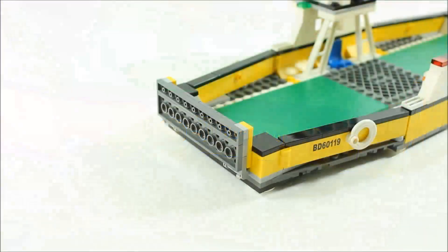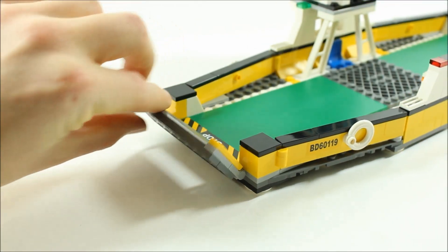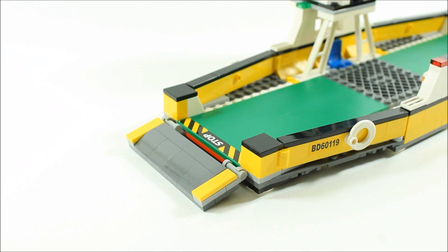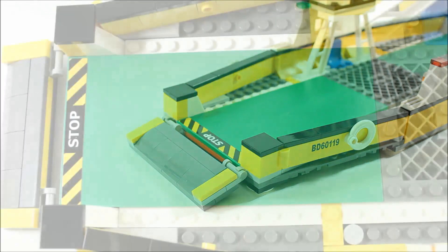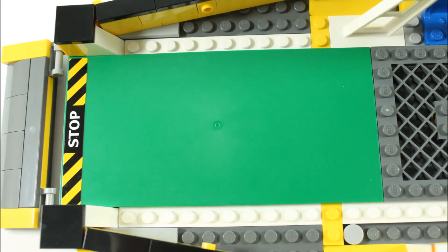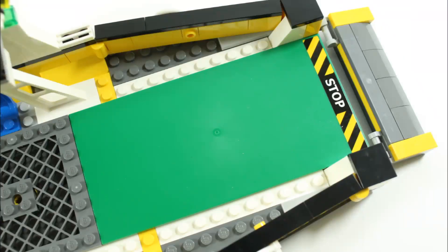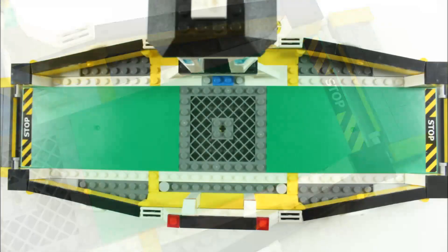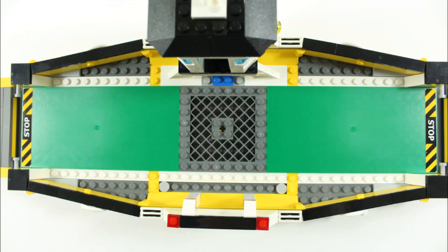The gates at either end are hinged so they simply pull up and down. They have slope grey tiles so vehicles can easily drive over them. A nice little touch was these yellow and black stop stickers just in front of the gates. The whole vehicle parking section in the middle is made of two 8x16 green flat plates and an 8x8 grey grille piece.